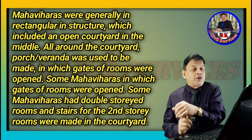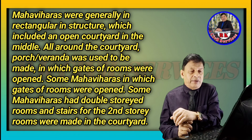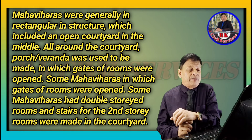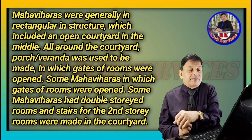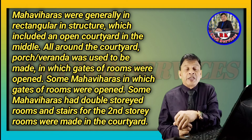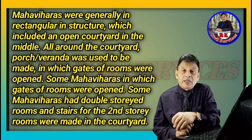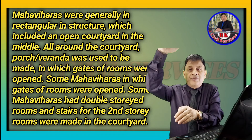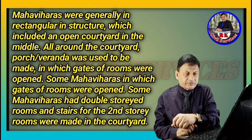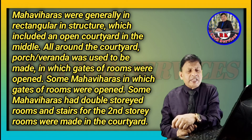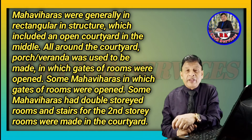All around the courtyard was a porch, a verandah where the doors of rooms opened. Mahaviyaras were double-storied — a first and second floor — and rooms and stairs for the second storey were made in the courtyard.